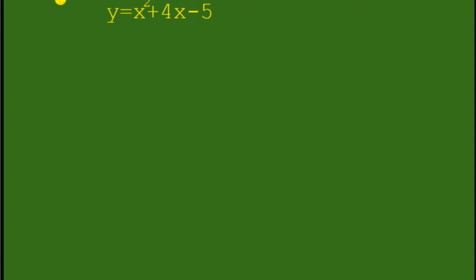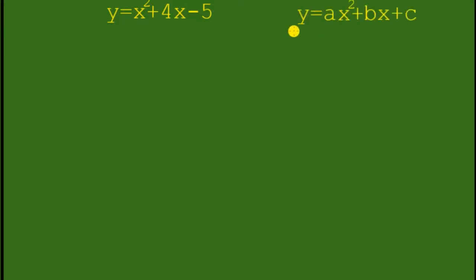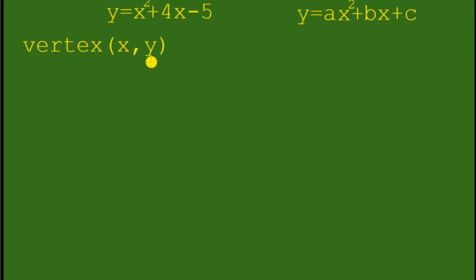We have here the quadratic function y equals x squared plus 4x minus 5, and we will find the vertex of this quadratic function. This is the standard form of the quadratic function. The vertex is the ordered pair x, y.